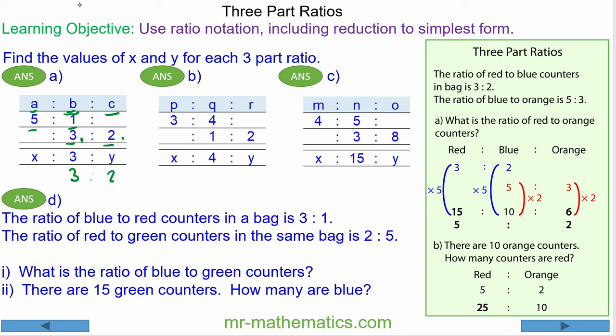When we look at the ratio a to b, 1 multiplied by 3 will make 3, so we use an equivalent ratio and multiply the 5 by 3, which makes 15. So the three-part ratio is 15 to 3 to 2.